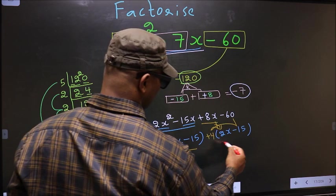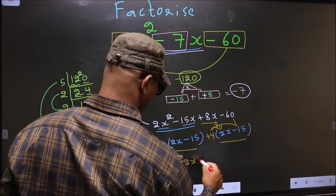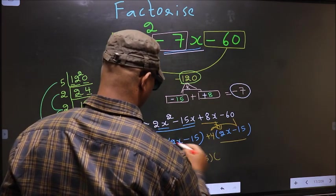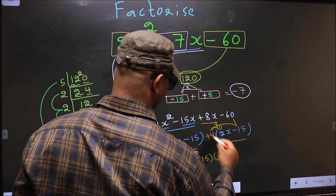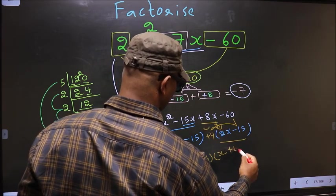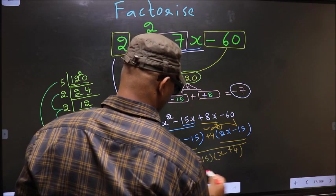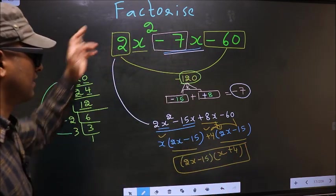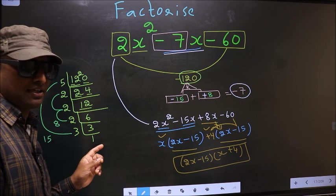Now you take out (2x - 15) common. Here you have x and here you have plus 4. So this is our answer. Am I clear?